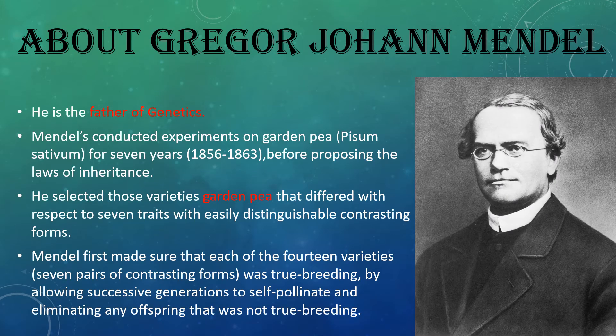We will begin with Gregor John Mendel, who was the father of genetics. Mendel conducted experiments on garden pea, whose scientific name is Pisum sativum. He conducted experiments for many years and later proposed the laws of inheritance.